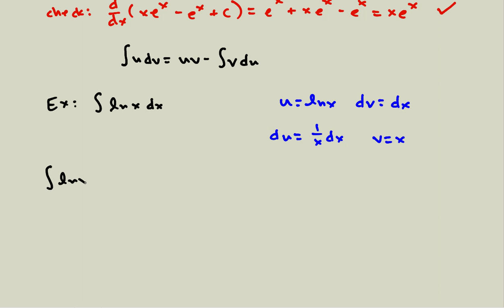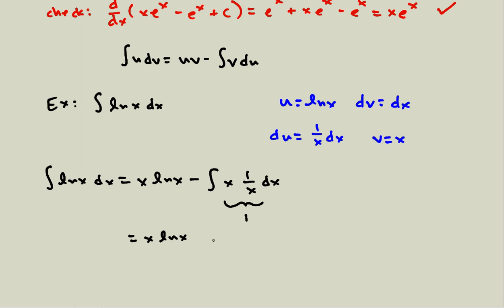Plugging into the formula: the integral of ln(x) dx equals uv minus the integral of v du. Since v is x and u is ln(x), I have x ln(x) minus the integral of v du, where v is x and du is 1/x dx. I notice that x times 1/x cancels, leaving just the integral of 1. So evaluating: x ln(x) minus x, plus c.